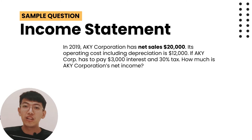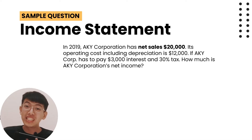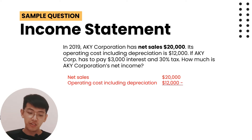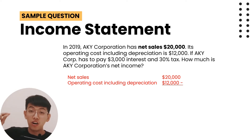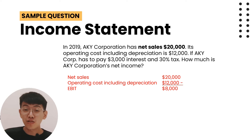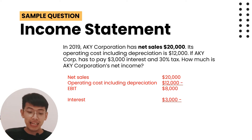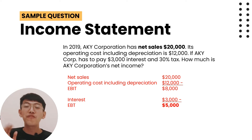AKY Corporation has to pay 3,000 dollars in interest and a 30% tax rate. How much is AKY Corporation's net income? First, net sales is 20,000 dollars and operating cost including depreciation is 12,000 dollars. EBIT equals 20,000 minus 12,000, which is 8,000 dollars. EBT equals EBIT minus interest: 8,000 minus 3,000 equals 5,000 dollars.